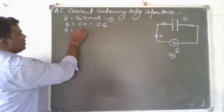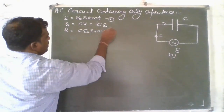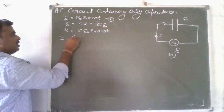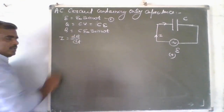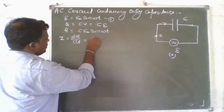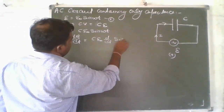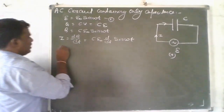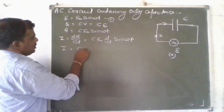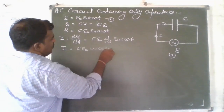So Q equal to C E naught sine omega T. Then, the value of current: current I equal to dQ upon dT. So, differentiating C E naught sine omega T with respect to T gives C E naught omega cos omega T.